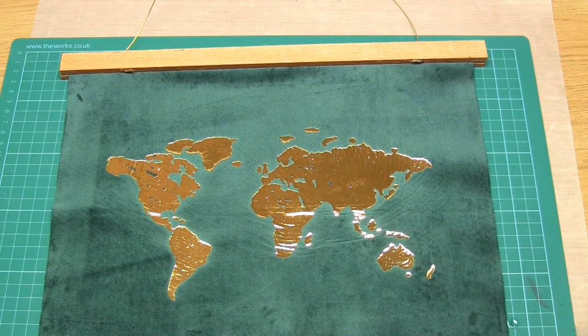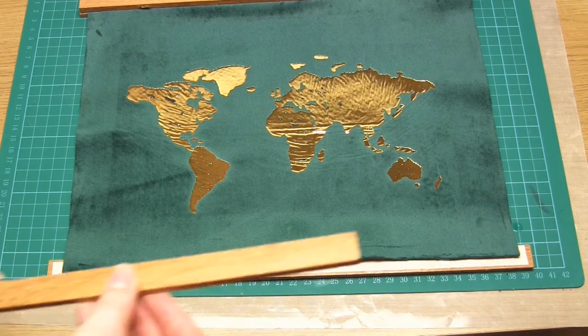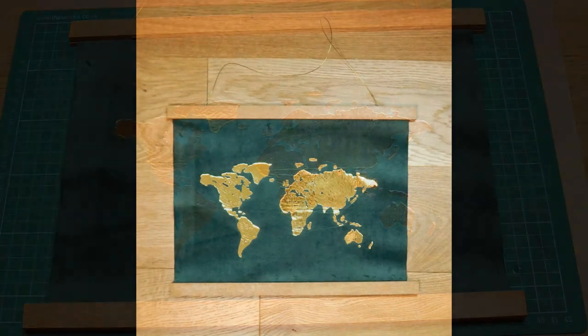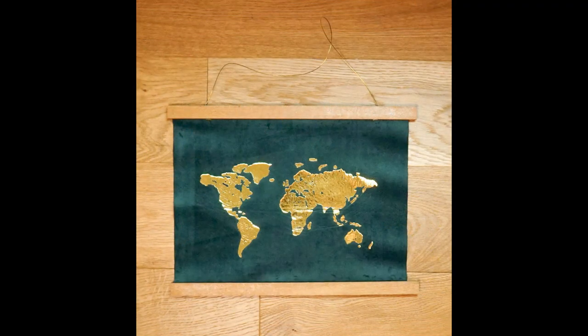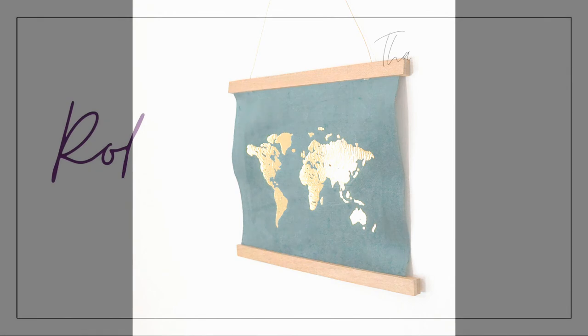In order to hang it on the wall, I just attached a magnetic wooden hanger. And that's it—your wall hanging is now complete. I'm really pleased with how this turned out, and I think the green and gold look so good together, particularly when it shines in the light. I really hope you enjoyed this project, and thank you very much for watching.